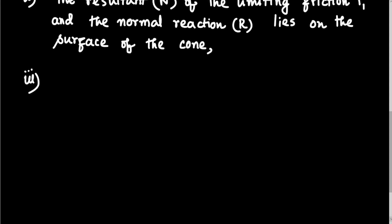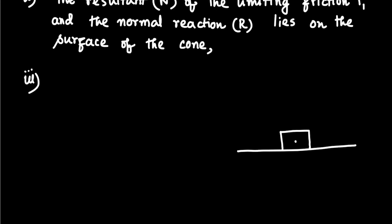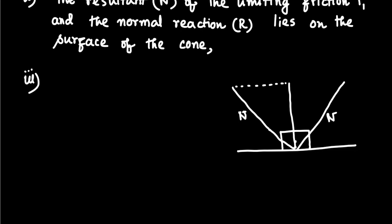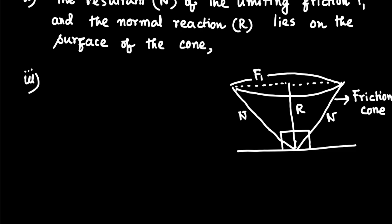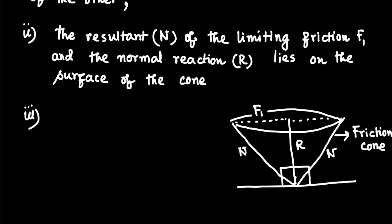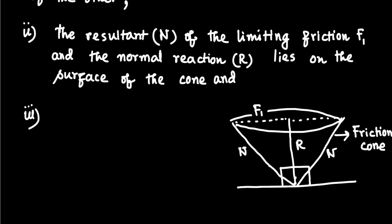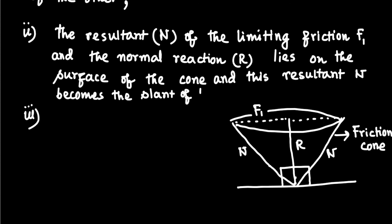Drawing the diagram again: the body is placed on a rough surface. R is the normal reaction, and the slant is the resultant N. FL is the radius of the friction cone and we get the circular base. This cone is known as the friction cone, and it is assumed at the lowest point of the body for convenience. The resultant N lies on the surface of the cone and becomes the slant of the friction cone.